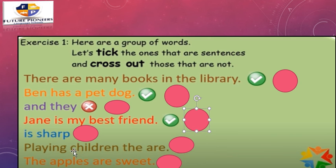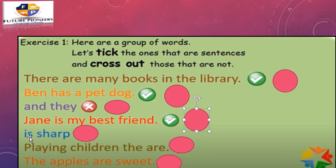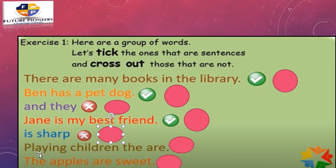'Is sharp' — is it a sentence? Does it give you a complete thought? What is sharp? We don't know — there is no subject. For example, 'the knife is sharp,' but here we don't know what is sharp. It doesn't give us a complete thought and doesn't make sense. There is no subject, and it doesn't begin with a capital letter, and there is no period. This is not a sentence — let's put a cross. What about 'Playing children'? It doesn't give us a complete thought — this is not a sentence. Cross it out.